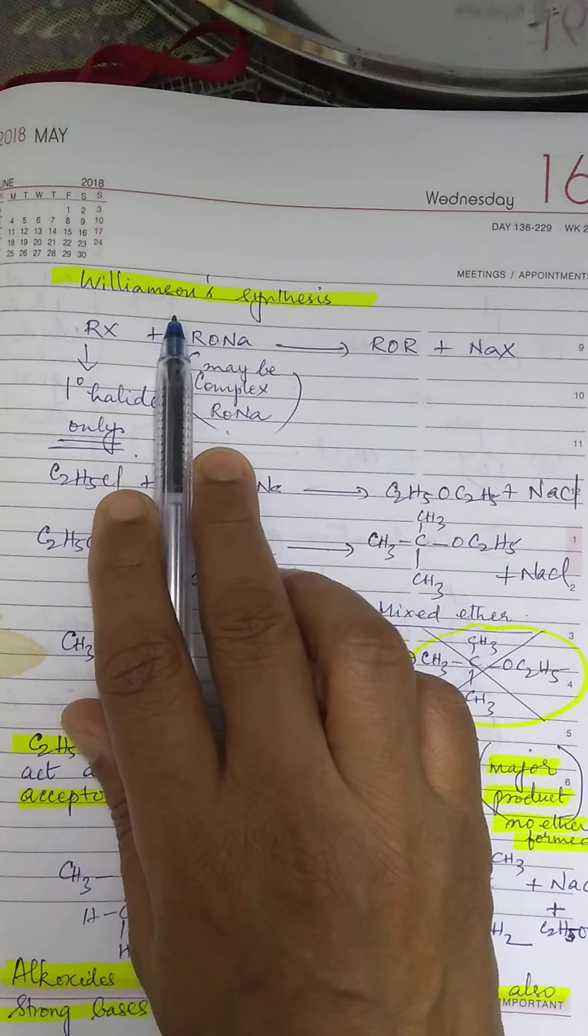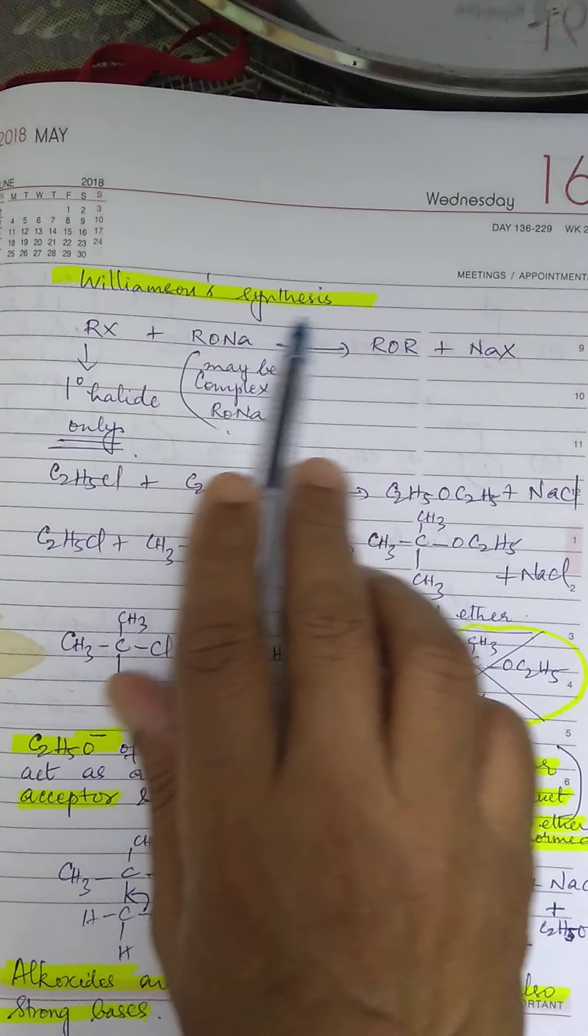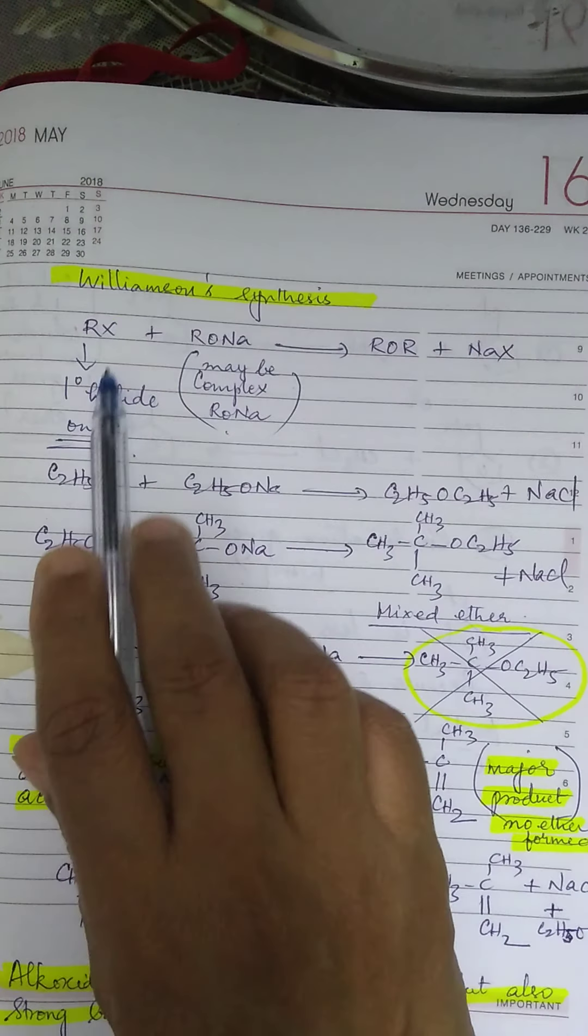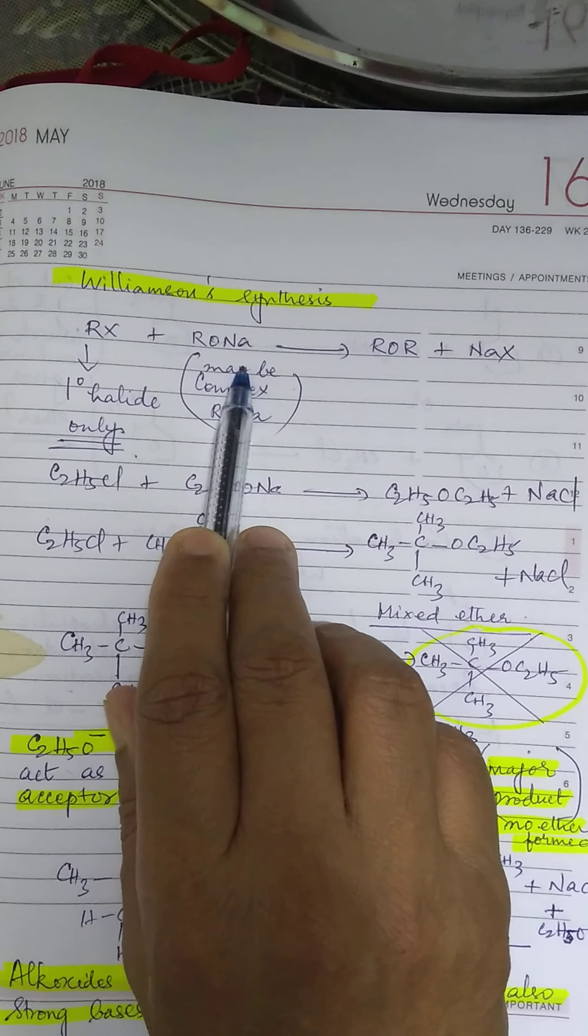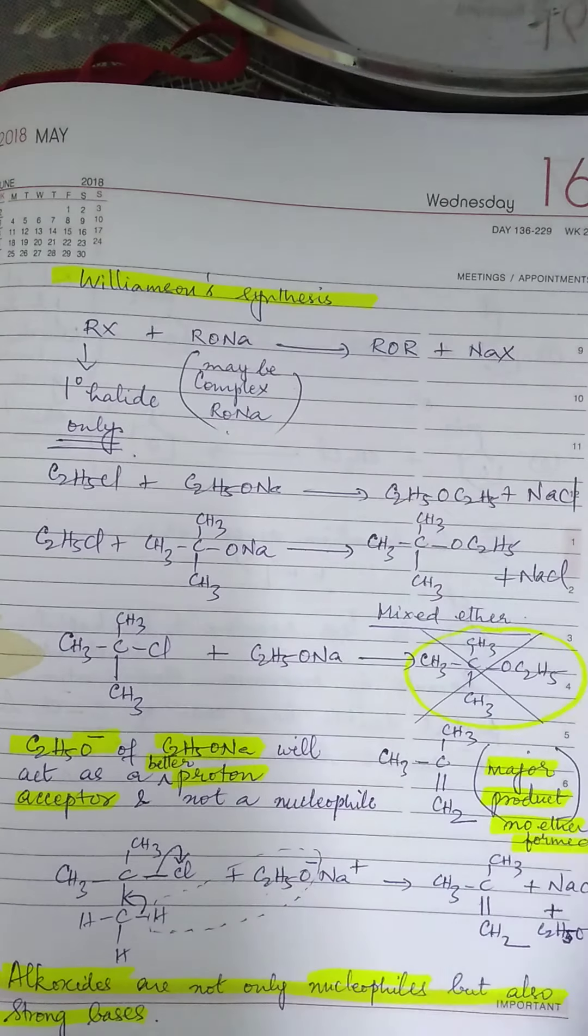Let us see the next method for the preparation of ethers, that is Williamson synthesis. Williamson synthesis is RX plus RONa gives you ROR plus NaX.